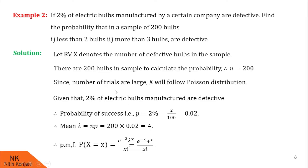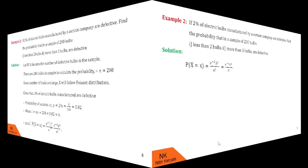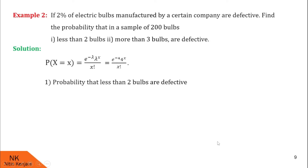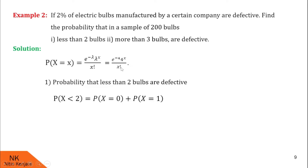Now we calculate the probability that less than 2 bulbs are defective: P(X < 2) = P(X = 0) + P(X = 1). P(X = 0) = e raised to minus 4, multiplied by 4 raised to 0, upon 0 factorial. And P(X = 1) = e raised to minus 4, multiplied by 4 raised to 1, upon 1 factorial. After using a calculator, P(X < 2) is 0.0915. This is the probability that less than 2 bulbs are defective.